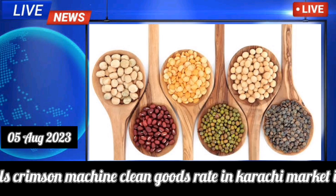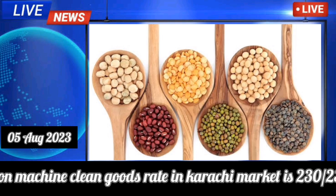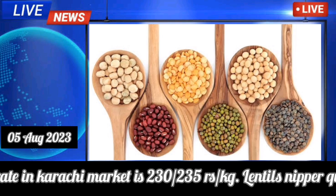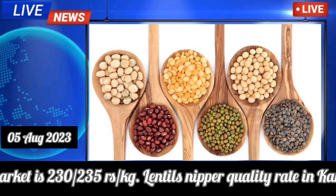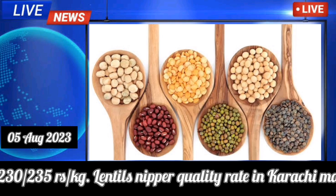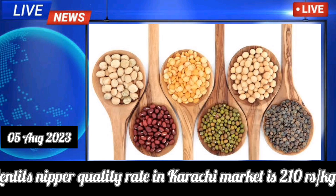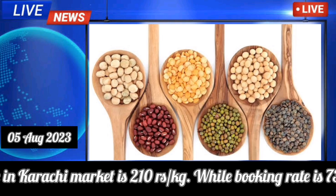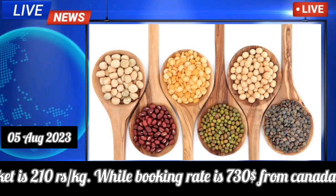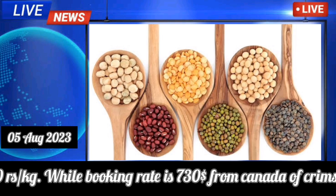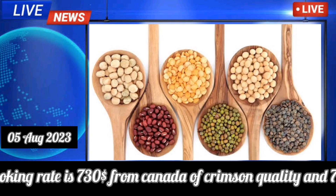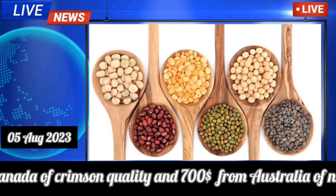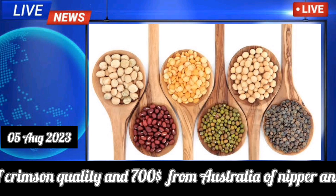Lentils crimson machine cleans good rate in Karachi market is 232 to 235 rupees per kilogram. Lentils nipper quality rate in Karachi market is 210 rupees per kilogram. Booking rate is 730 USD from Canada for crimson quality and 700 USD from Australia for nipper and nugget quality.